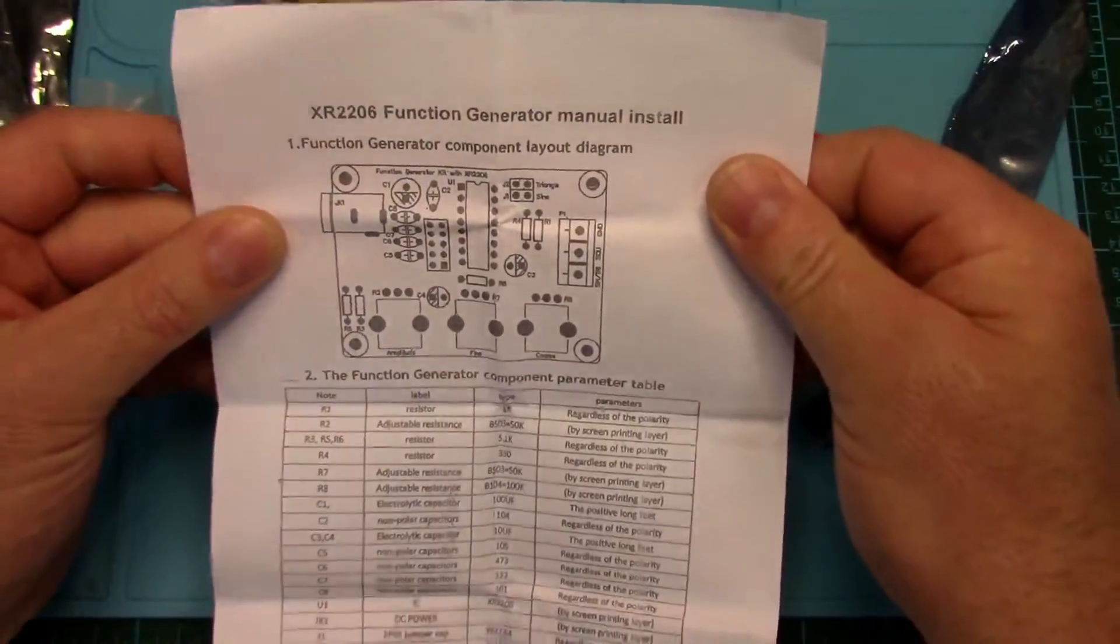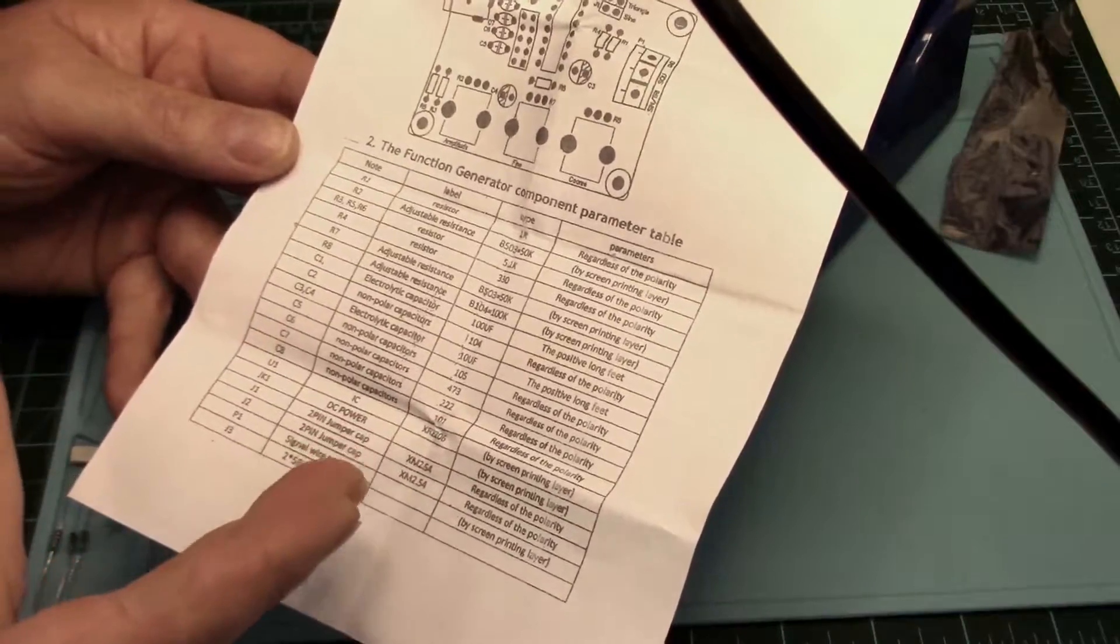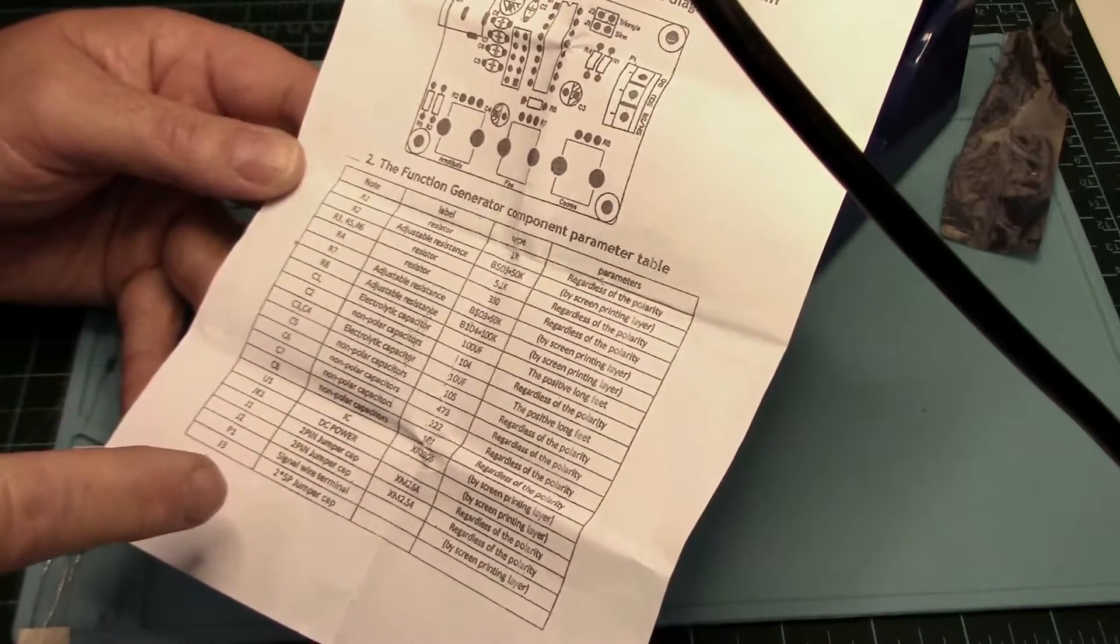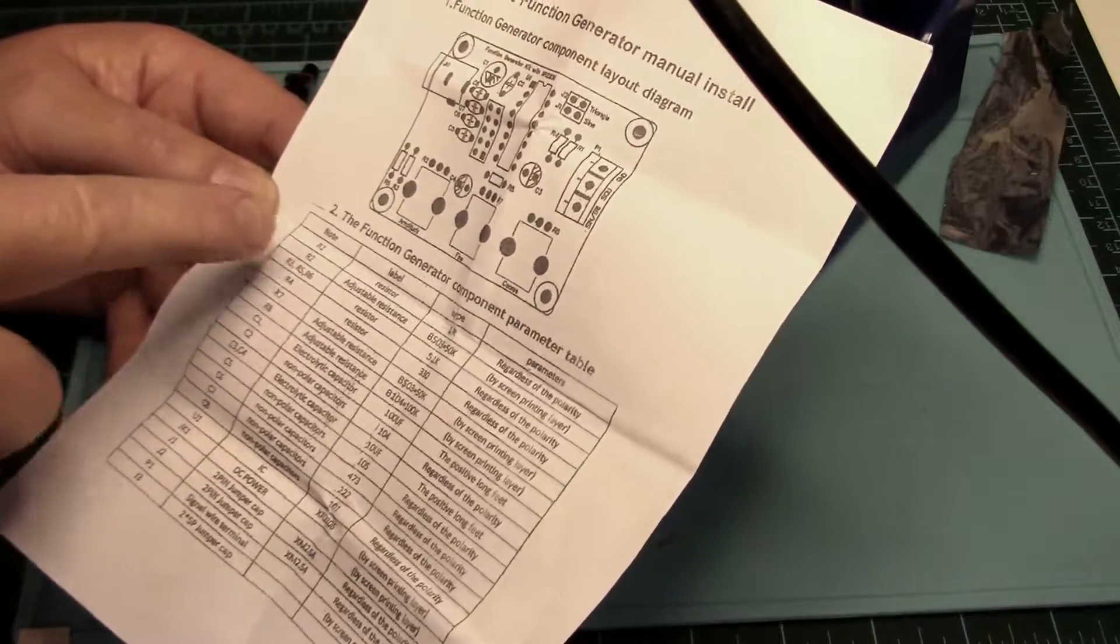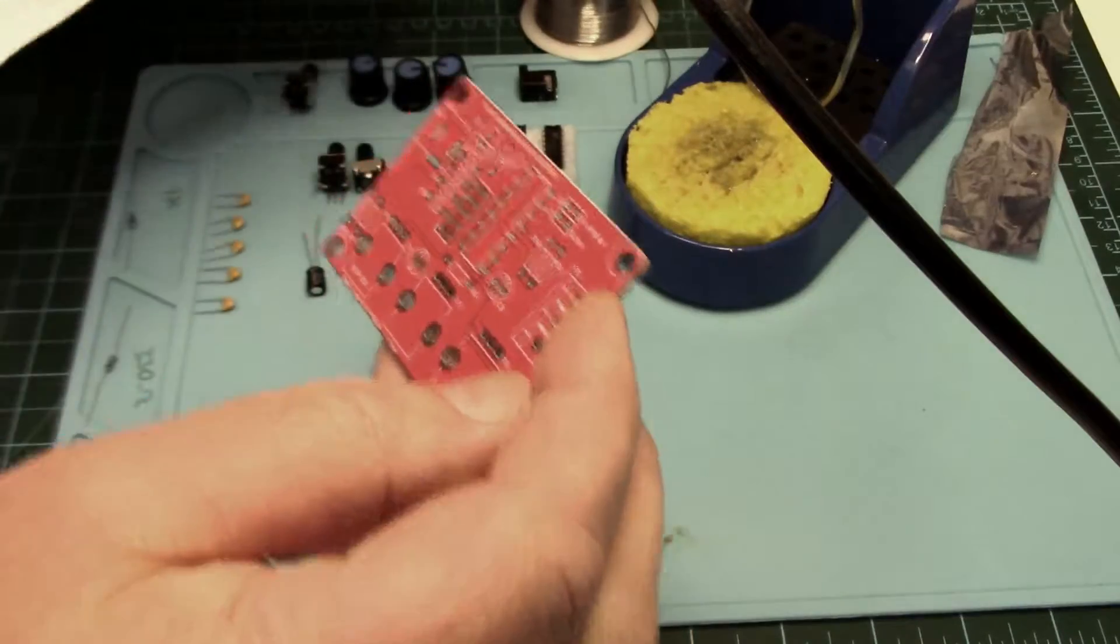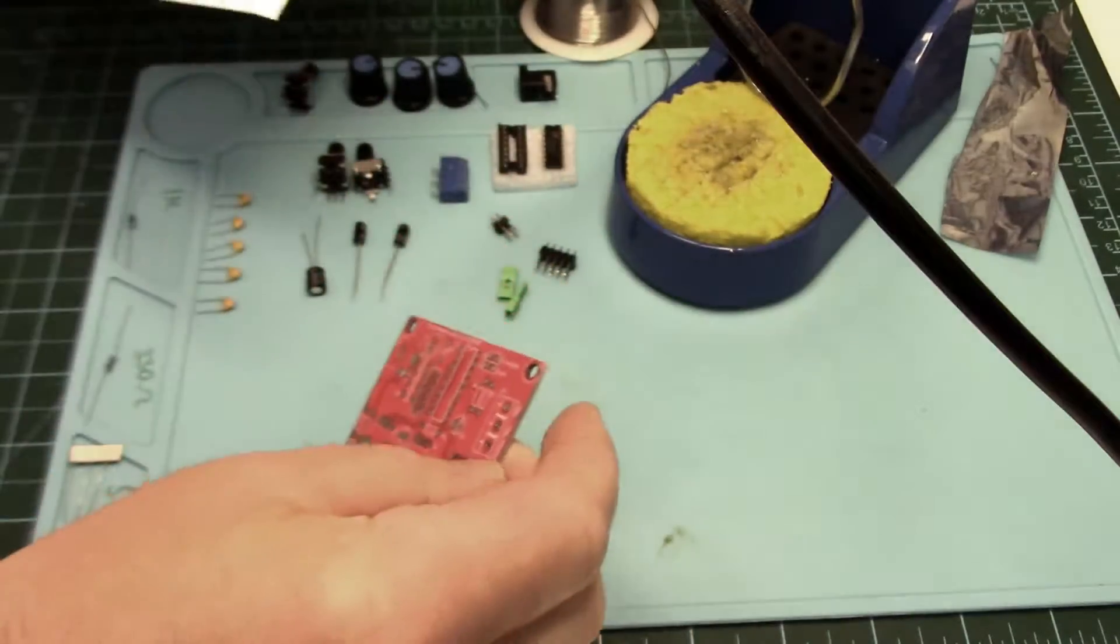It shows where everything's placed, so following along is very simple. They've got all the resistor values listed, the capacitor values, and what the number is. You just look at the number. The numbers are all listed right on the board. So R1, R2, C1, C2, etc.